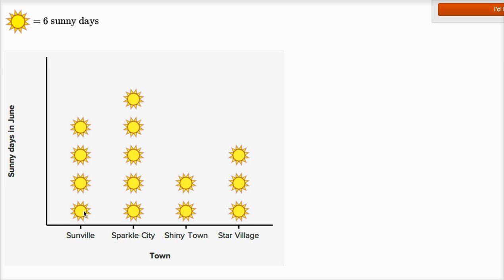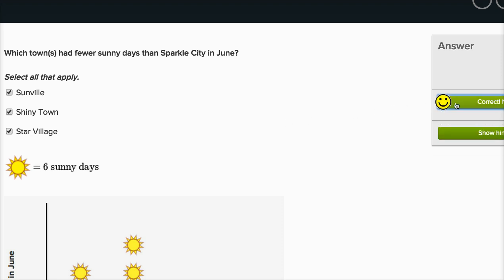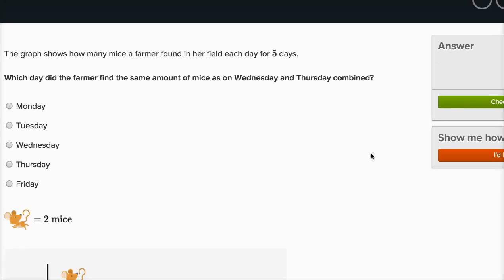We actually don't even have to calculate how many sunny days each of these represent. Although if you cared, Sunville would be four times six — 24; Shinytown would be two times six — 12; and Star Village would be three times six — 18 sunny days in June. But all three of them had fewer sunny days than Sparkle City in June. Let's keep going.